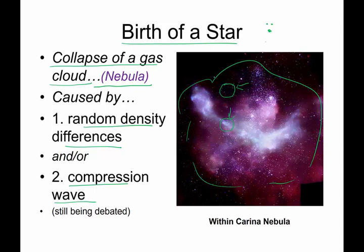Gravity works because one atom attracts another atom and they clump together really close. Then they have two times the gravity, so they have a better chance of attracting a third atom. And then once you have one, two, three, that will attract another atom. Slowly over time, as these particles get more and more, they end up with more gravity. So more particles equals more gravity.